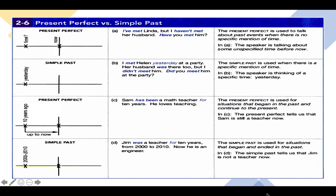For example, here we have the first situation: 'I have met Linda, but I haven't met her husband. Have you met him?' In all of these examples, there is no specific time mentioned for the verbs, so that's why we just use the present perfect: 'I have met,' 'I haven't met,' 'have you met.'